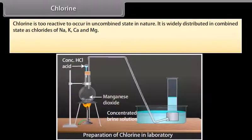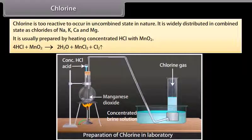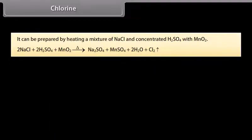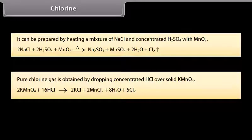Chlorine: Chlorine is too reactive to occur in the uncombined state in nature. It is widely distributed in the combined state as chlorides of Na, K, Ca and Mg. It is usually prepared by heating concentrated HCl with MnO₂, or by heating a mixture of NaCl and concentrated H₂SO₄ with MnO₂. The gas is passed through water to remove HCl and then dried by passing through concentrated H₂SO₄. Pure chlorine gas is obtained by dropping concentrated HCl over solid KMnO₄.